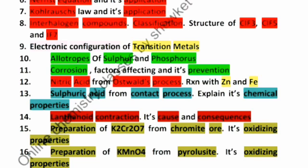Next is lanthanide contraction, its cause and consequence, and the preparation of potassium dichromate (K2Cr2O7) from chromite ore and its oxidizing properties, and similarly preparation of potassium permanganate (KMnO4) from pyrolusite ore. Its oxidizing properties are important.